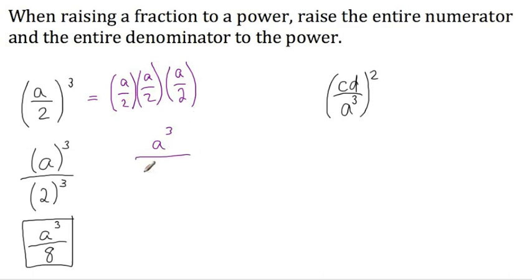And in the denominator, I have 2 times 2 times 2, which is 2 cubed, or 8. So we get the same thing, a cubed over 8.